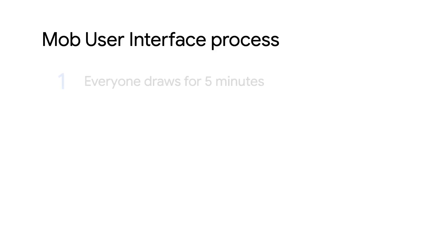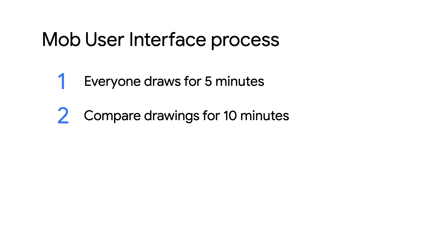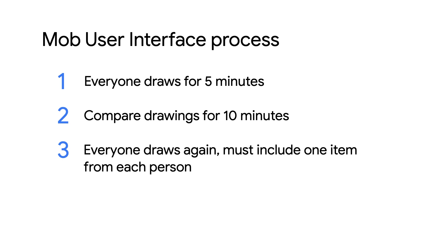So would you lay out the process for us? Sure. Everyone draws for five minutes their UX design, and then you spend about 10 minutes comparing designs and everyone shares their ideas. Then you do another round, but this time you must include one item from every other person, or at least one other person. You spend 10 minutes going around showing what you came up with, indicating where you got each idea from. You repeat this about three times, and what will happen is you actually converge into a single design.